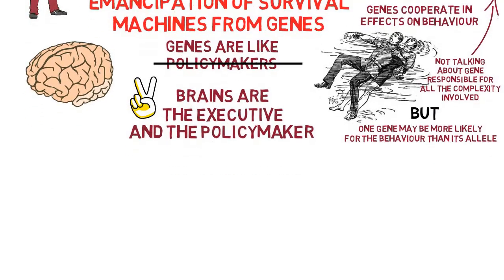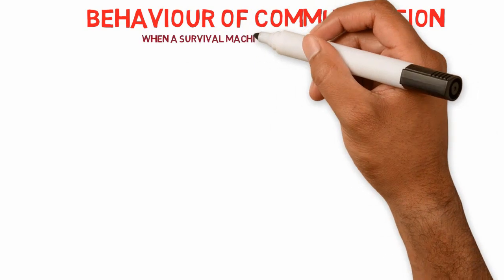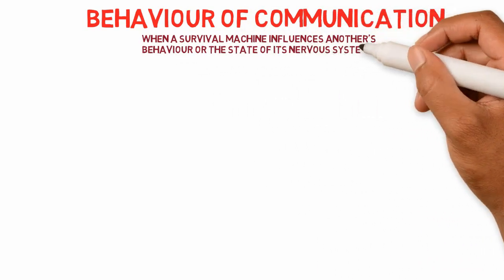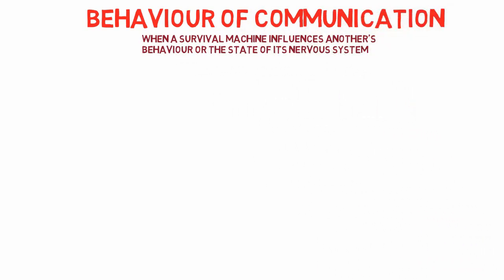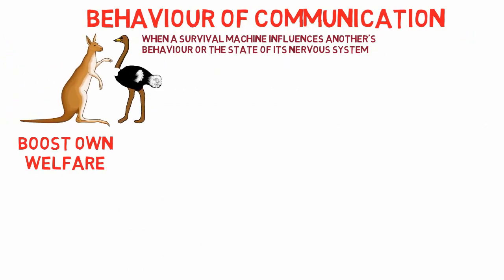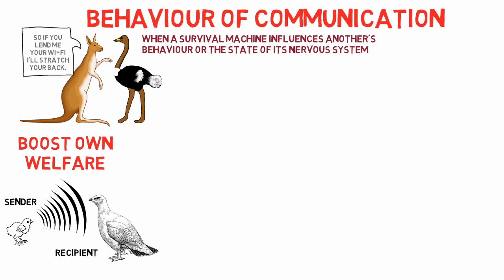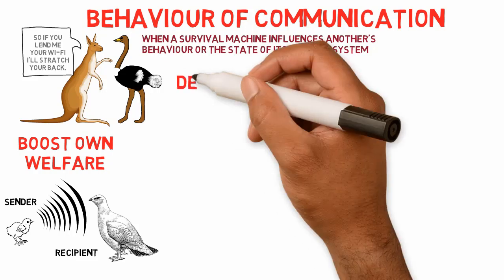Dawkins points out that an important behavior to discuss is communication, which he broadly defines as when a survival machine influences another's behavior or the state of its nervous system. As survival machines may boost their own welfare by influencing others, animals expend tremendous effort making their communications effective. Ethologists theorize that communication signals evolve for the mutual benefit of both sender and recipient — for example, lost or cold baby chicks give off high piercing sounds to summon their mothers, who respond immediately.